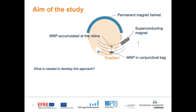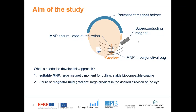What do we need to develop such an approach? Of course, we need the magnetic particles. They have to show a large magnetic moment for a strong magnetic force, but they also should be stable regarding agglomeration in different materials, for example in tears or in blood. Second, we need a magnetic field gradient and we have to develop magnets for this, but that will not be part of the talk today — it was separate work. And third, we need a setup for the evaluation and the transport of the magnetic particles through the eye tissue.